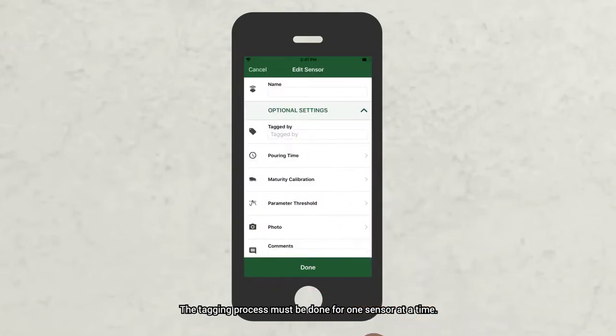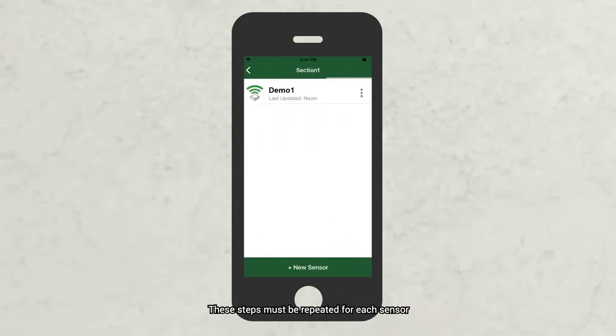The tagging process must be done for one sensor at a time. These steps must be repeated for each sensor that the user would like to use in their project. We recommend tagging the sensors in the office.